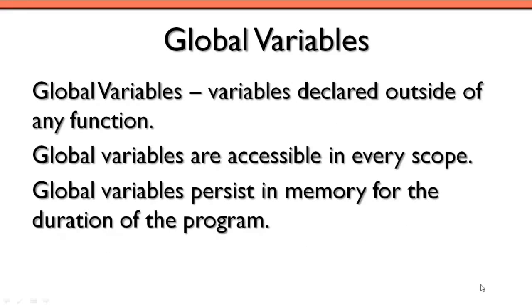In contrast to local variables, we have global variables, which are declared outside of any particular function and can be accessed from anywhere — it doesn't matter what function we're in. In many cases, global variables will be constants, so we couldn't modify the variable but could still access it. In program six, we declared a constant for pi that was accessible anywhere — that's generally how you'll use global variables. Your program should not have a lot of global variables, and global variables exist in memory for the duration of the program.